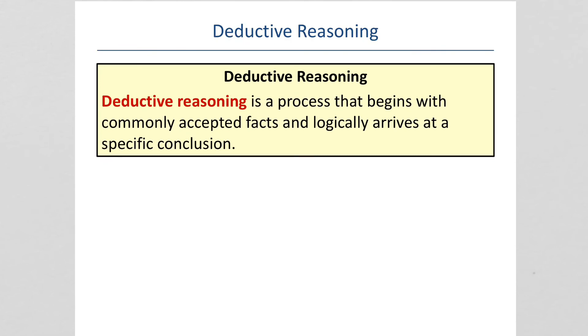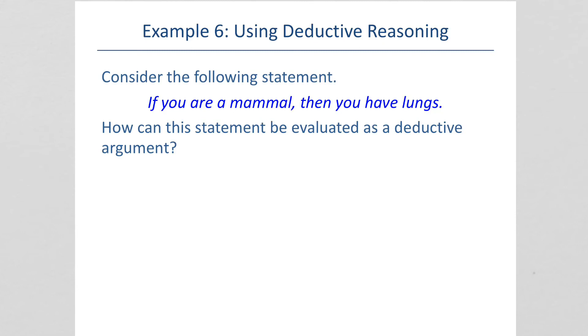Deductive reasoning is a process that begins with commonly accepted facts and logically arrives at a specific conclusion. Consider this statement. If you are a mammal, then you have lungs. How can this statement be evaluated as a deductive argument? So we're not really asked to say if this is a true statement or not. We're just asked to evaluate it. So the statement has two parts. Determining if you're a mammal and whether or not you have lungs. So in the first part, you would say, I am a mammal. And this is true.